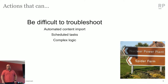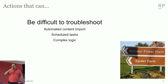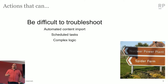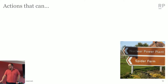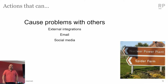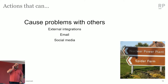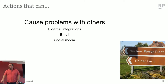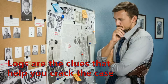Anything that can be difficult to troubleshoot - automated tasks, content imports, things that take a long time - might not be easy to troubleshoot, but definitely are things you should be adding logs to so you can figure out what's going on. Anything that's complex logic - you'll know when you're writing the code - these are things that should be looked into, so you want to have a closer eye on what's going on. And perhaps most importantly, anything that's going to cause problems with others if it breaks. If you're sending emails in your code, you really want to make sure you're sending them to the right people. Did I actually send an email to all of the customers from my dev environment? That goes for social media and external integrations - anywhere you're going to be bothering somebody else. When something happens, logs are the clues that are going to help you find out what happened. They'll help you crack the case - why did this happen, how did this happen, what happened?